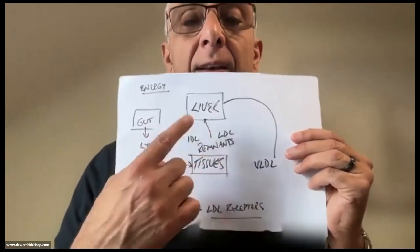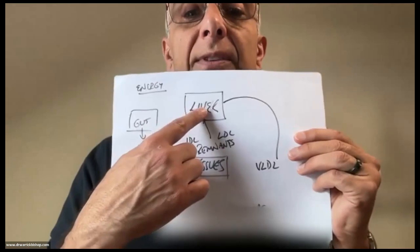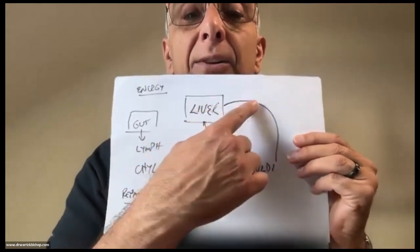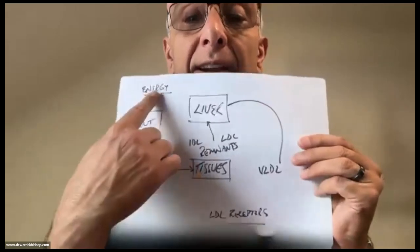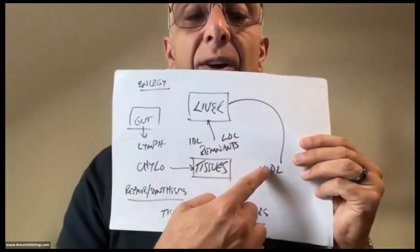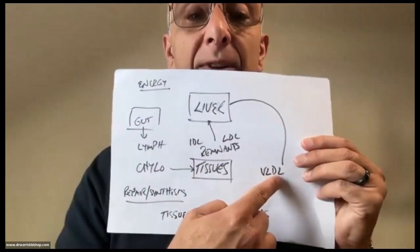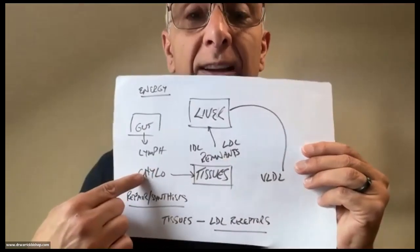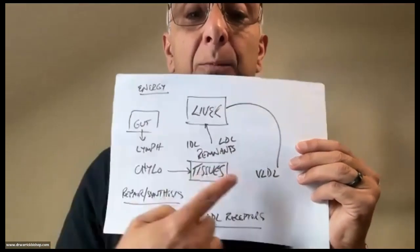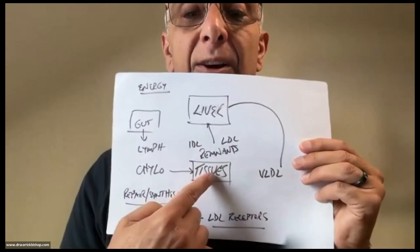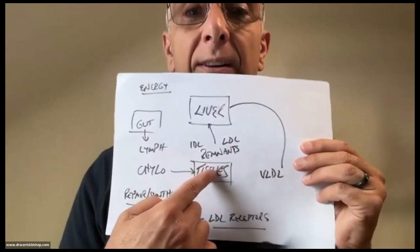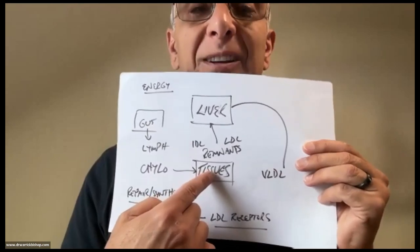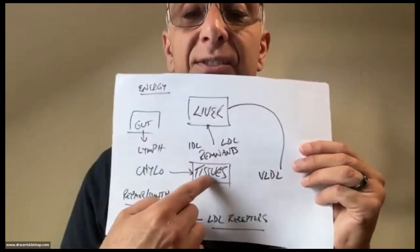So what does the liver do? The liver doesn't produce LDL cholesterol. The liver produces a particle for energy called a very low density lipoprotein. A very low density lipoprotein looks an awful lot like a chylomicron, and its job is basically to go to the tissues where it gets acted on by lipoprotein lipase to split out the triglycerides and deliver the energy.